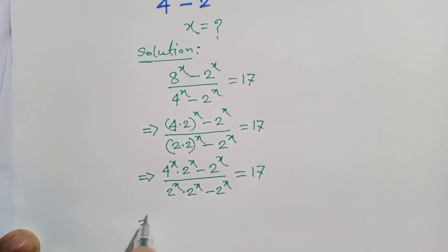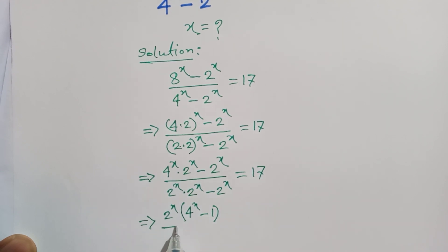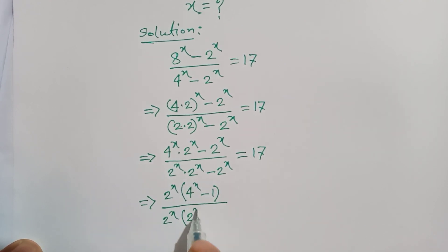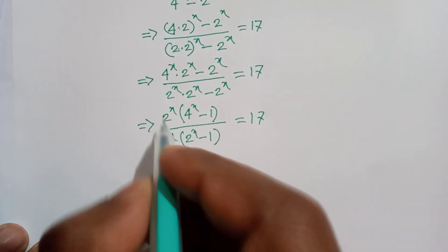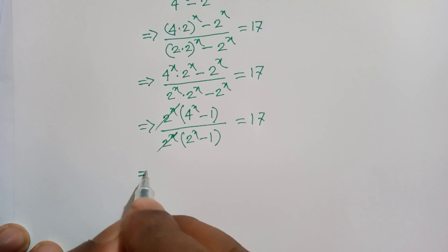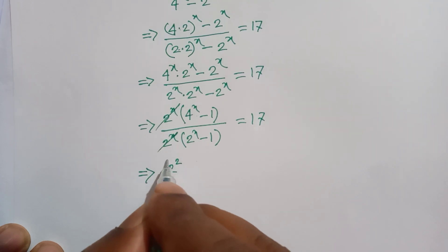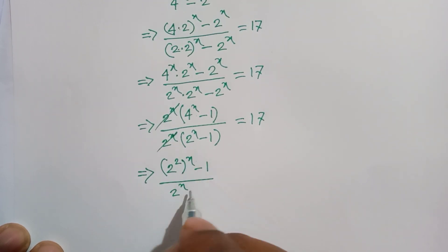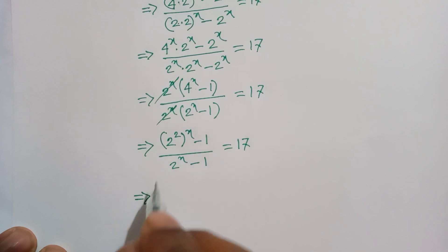Now we take 2 to the power x as a common factor in the numerator: 2 to the power x times (4 to the power x minus 1). In the denominator, we also take 2 to the power x common: 2 to the power x times (2 to the power x minus 1), equals 17. The 2 to the power x cancels out, and 4 can be written as 2 squared, so we get (2 squared) to the power x minus 1, divided by 2 to the power x minus 1, equals 17.